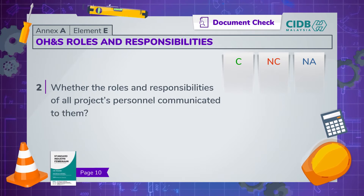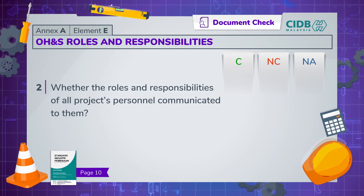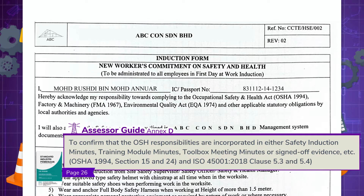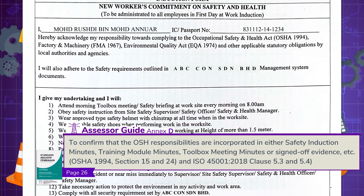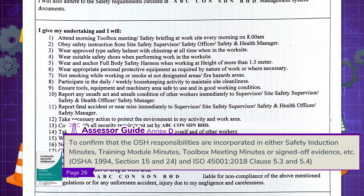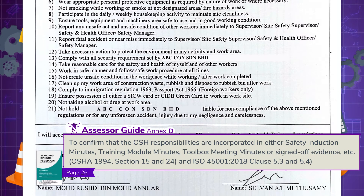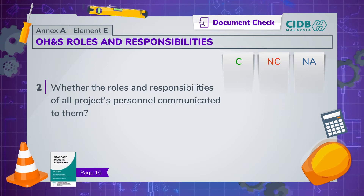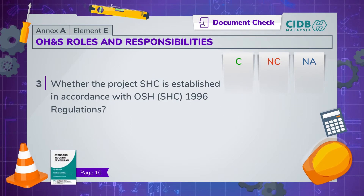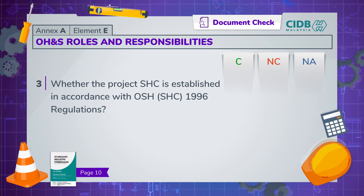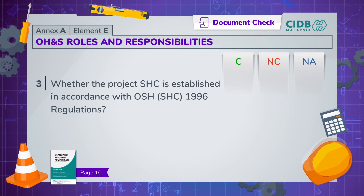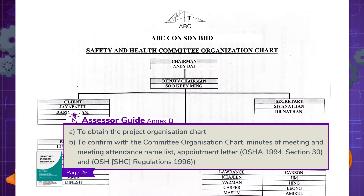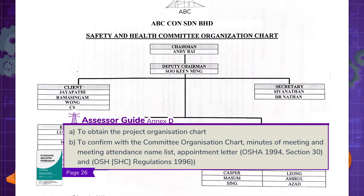Next, verify whether the roles and responsibilities of all project personnel are communicated to them. This can be confirmed by checking whether the OSH responsibilities are incorporated in safety induction minutes, training module minutes, toolbox meeting minutes or signed-off evidence. Check whether the project safety and health committee is established in accordance with OSH SHC 1996 regulations by verifying the project organisation chart, committee organisation chart, minutes of meeting, meeting attendance name list, and appointment letter.